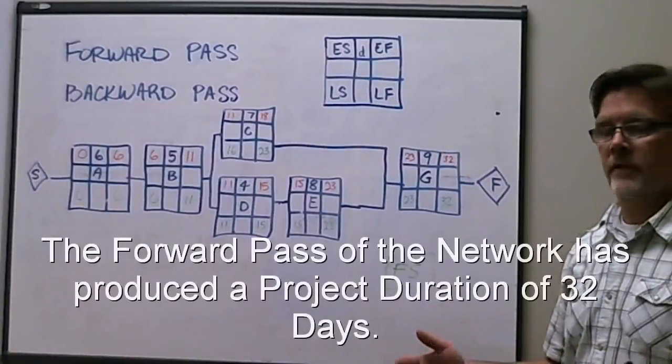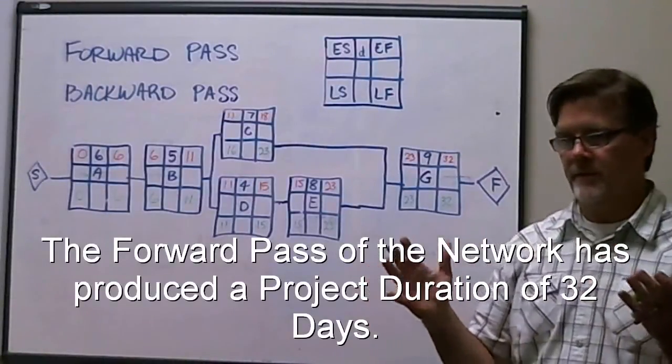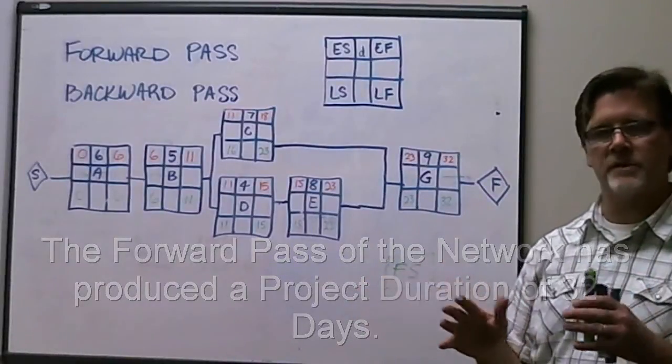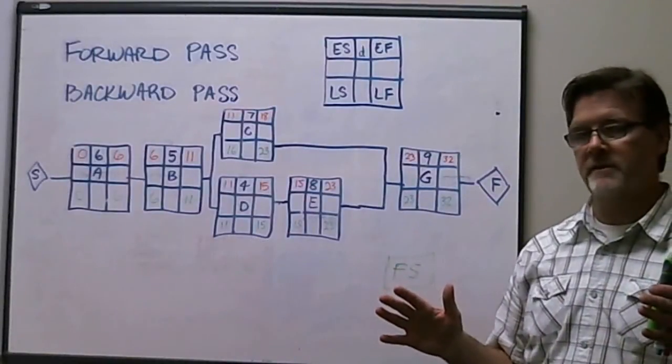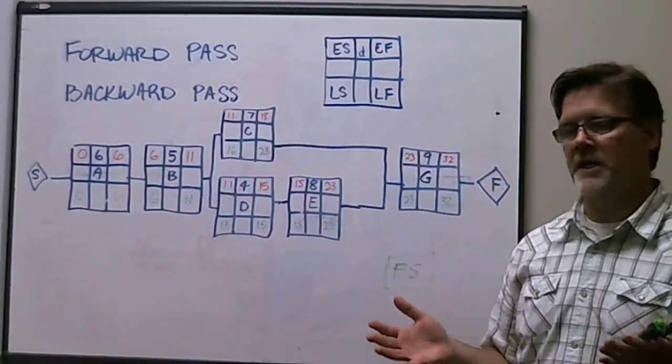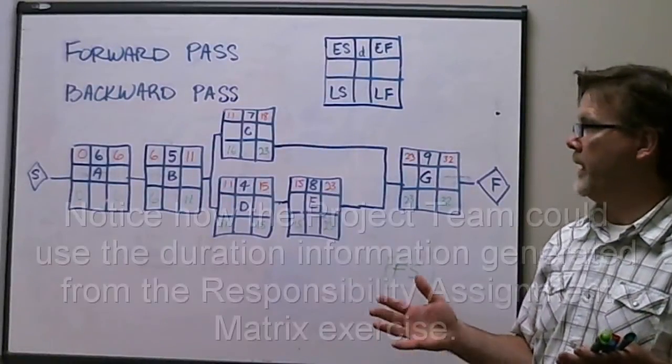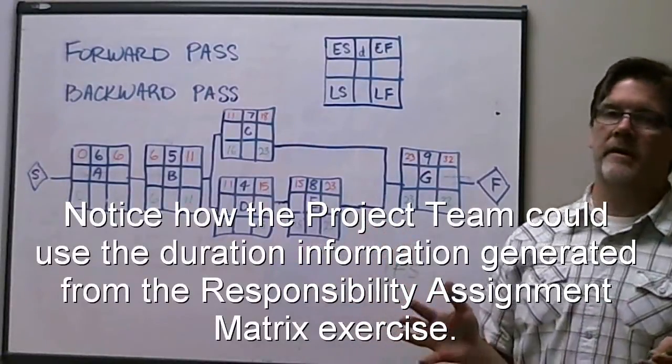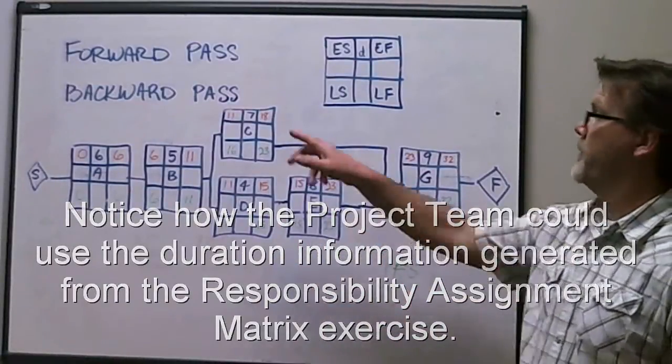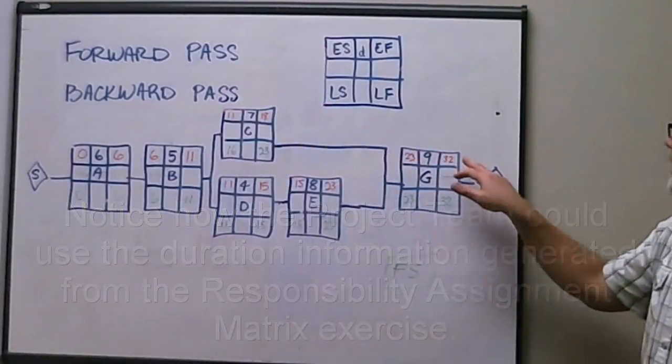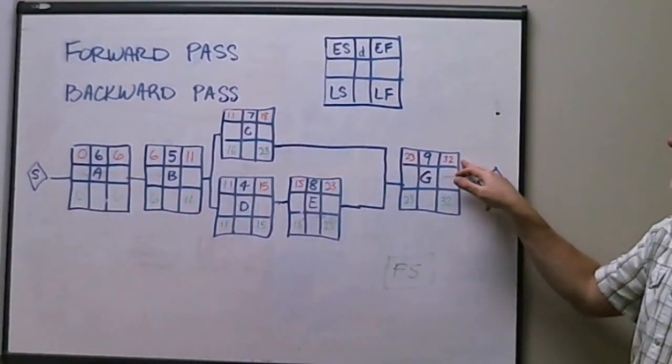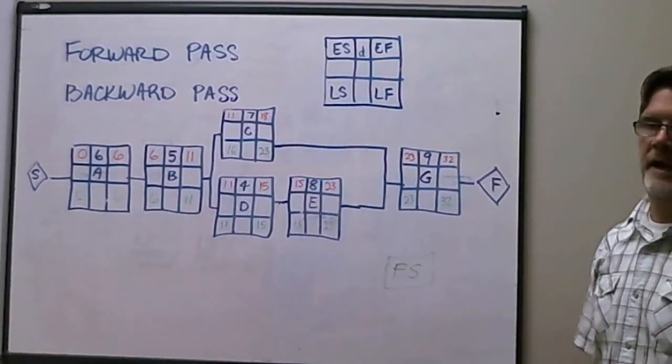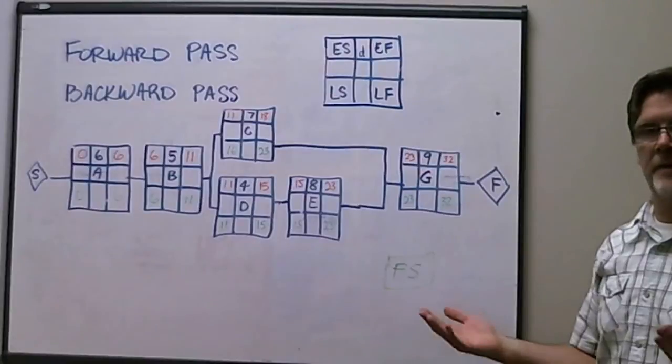So we've gotten somewhere now. We've actually taken our activities. We've sequenced them without any numbers, without any durations. Now we add durations to that logic that we've created. And through that, through simple math, I've now analyzed our network diagram and come up doing a forward pass of a duration of the project of 32. And in this case, I'm calling them days. 32 units of time are 32 days.